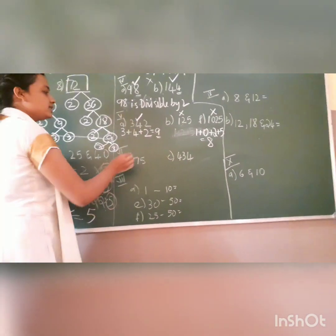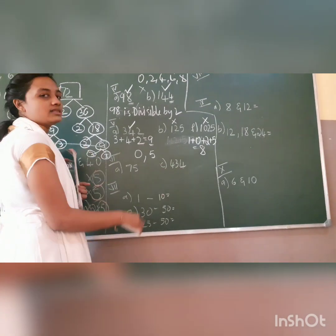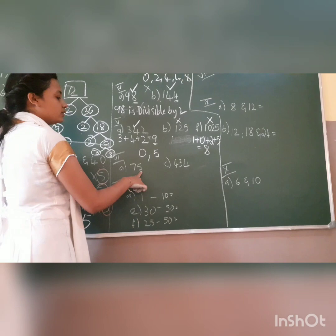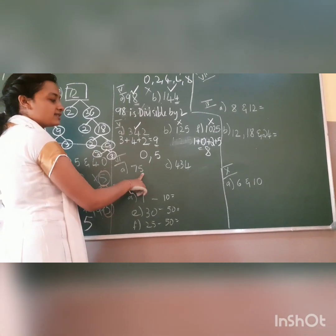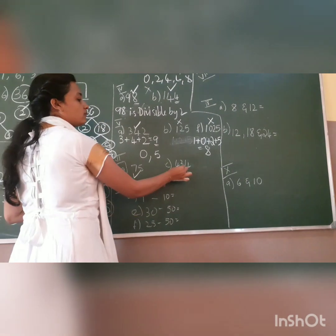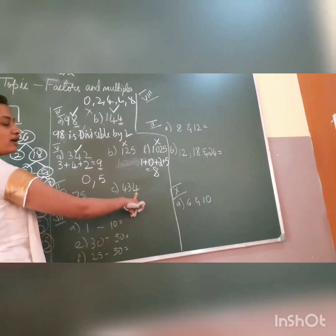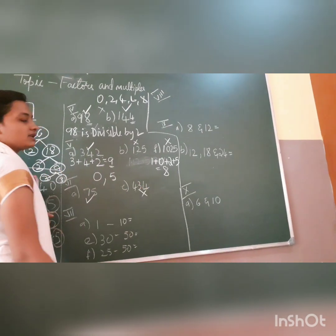6th question: check the divisibility by 5. This is very easy. If you have 0 or 5 in the unit's place, then it is divisible. If not, it is not divisible. For example, 75 has 5 in the unit's place, so it is divisible by 5. For 434, you have 4 in the unit's place — it is not 5 or 0, so it is not divisible by 5.